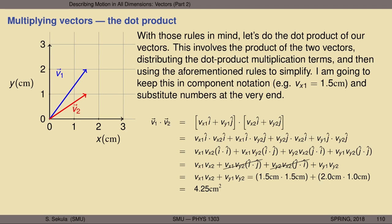Notice what happens if you do v1 dotted into itself — v1 dot v1. You get vx1 squared plus vy1 squared. Doesn't that sound familiar? That's the Pythagorean theorem — the sum of the squares of the sides of the right triangle that make up the vector, which equals the square of the vector's length, the hypotenuse. So the dot product is an elaborate way of recovering the Pythagorean theorem from vectors.